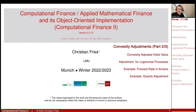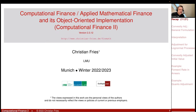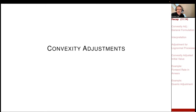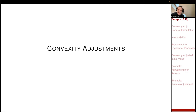Welcome to Applied Mathematical Finance. I'd like to continue our session on convexity adjustments. The discussion started with the observation that many financial products pay a certain index in units of a certain asset, and they fit together nicely in the sense that the index is a martingale if you choose the corresponding payment unit as numeraire. This leads to the definition of a natural payoff.